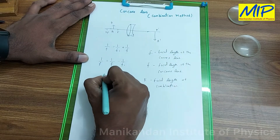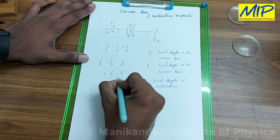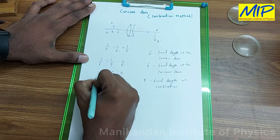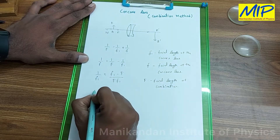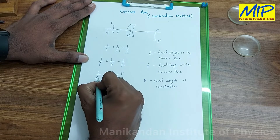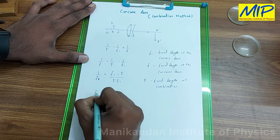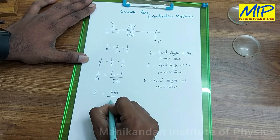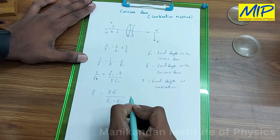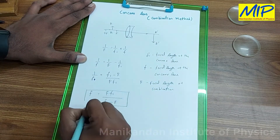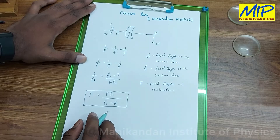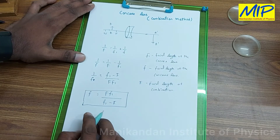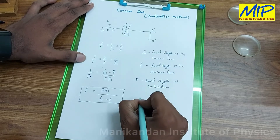This can be written as (F1 minus F) divided by (F times F1), which gives 1 over f. So I may rewrite this equation as: f equals F times F1 divided by (F1 minus F). This is the required expression to find the focal length of the concave lens. The focal length of the concave lens is always negative.